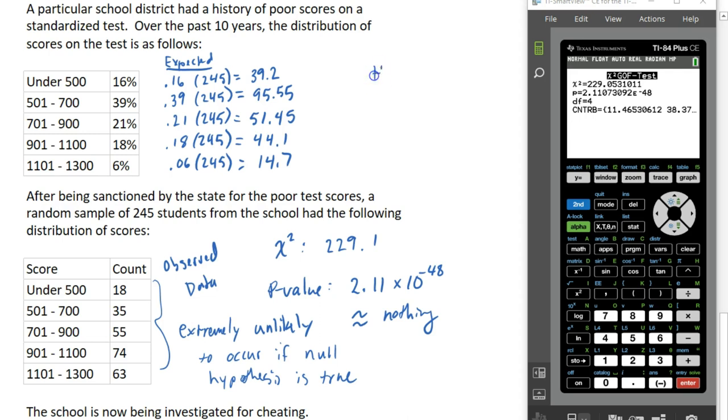And again, our null hypothesis here is that the distribution fits the data. So our goodness of fit test tells us that the data we got from our random sample is extremely unlikely to occur at this school.